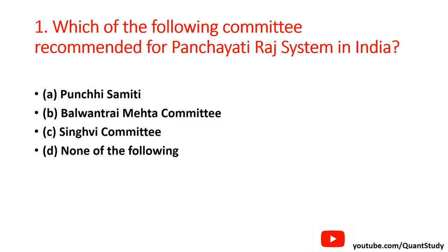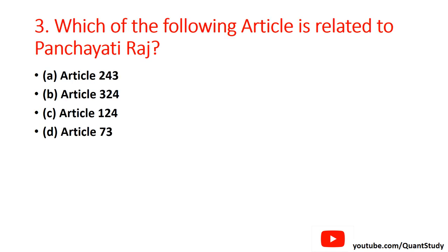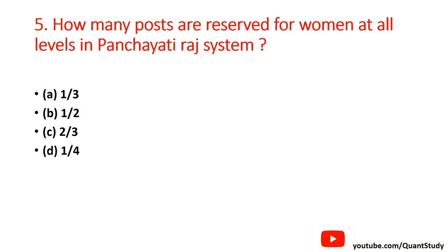Now there are a total of 5 questions for you. If you have understood, attempt them in the comment box. The first question: which committee recommended the Panchayati Raj system in India? The second question: how many tiers are there in the Panchayati Raj system?